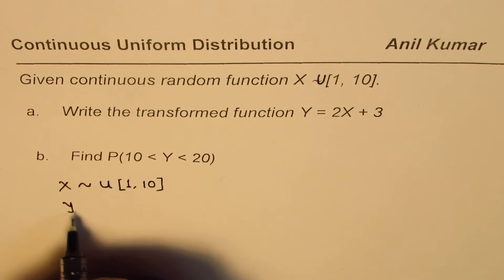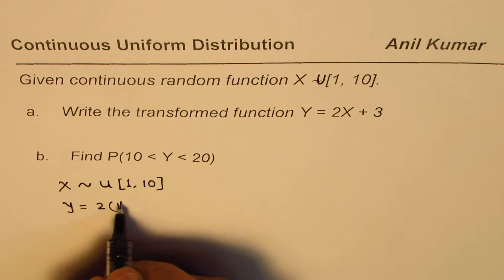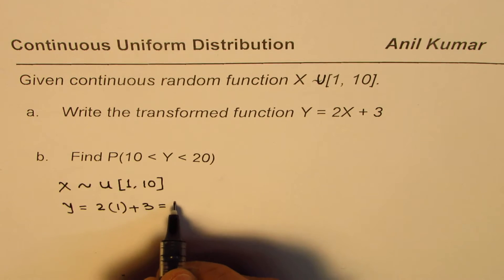So the lower value for Y will be Y = 2 times, we will substitute 1 here, plus 3, that gives us 2 plus 3, which is 5.